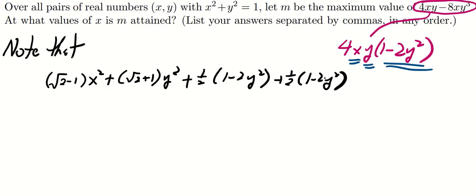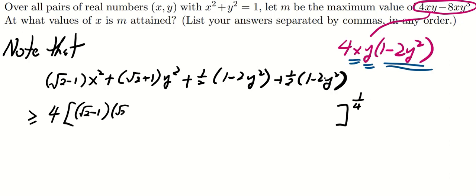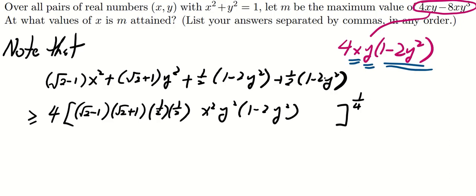Note that there are altogether 4 terms. Using the AM-GM inequality, we can say that this expression is greater than or equal to 4 times the product to the power of 1/4, where the product is (sqrt(2) minus 1) times (sqrt(2) plus 1) times (1/2) times (1/2) times x squared times y squared times (1 minus 2y squared) squared. This gives us something similar to the expression 4xy(1 minus 2y squared), and the expression we obtain equals 4.